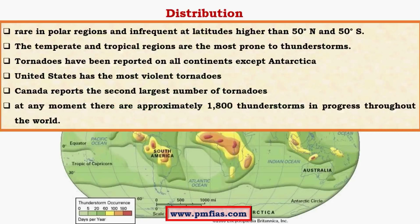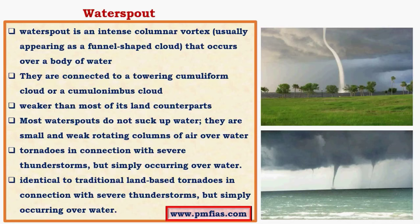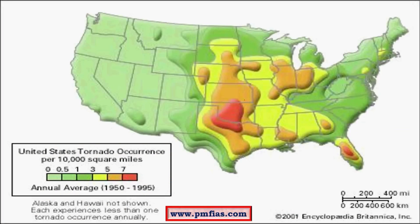Tornadoes are very rare in polar regions and infrequent at latitudes higher than 50 degrees north and south because temperatures are very low there. Below 50 degrees, phenomena like jet streams aid in the formation of thunderstorms and cyclonic systems. Temperate and tropical regions are the favorite zones — tropical regions because of high temperatures, and temperate regions because of jet streams influencing cyclonic conditions. Tornadoes have been reported on all continents except Antarctica. At any moment there are about 18,000 thunderstorms in progress throughout the world. Tornado Alley — spelled A-L-L-E-Y — is the region in south-central USA where thunderstorms are very violent and large-scale destruction occurs.